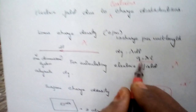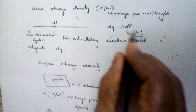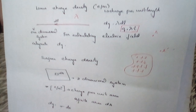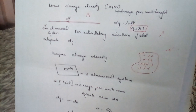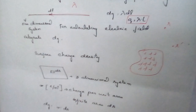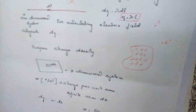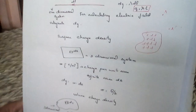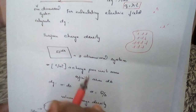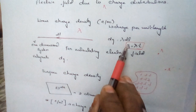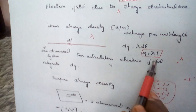The linear charge density or line charge density is given by the expression Q equal to lambda dot L. We are considering the electric field due to continuous charge distribution. So far we have discussed point charge distribution. In continuous charge distribution, we have the line charge density, the surface charge density, and the volume charge density. The line charge density is a one-dimensional system. Surface charge density is a two-dimensional system. The volume charge density is a three-dimensional system. The charge per unit length is given by DQ equal to lambda times DL, and Q equals lambda times L.